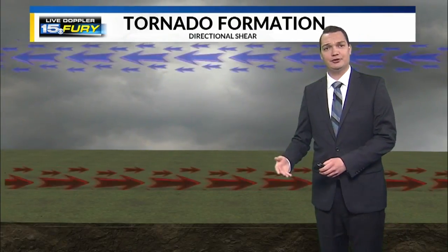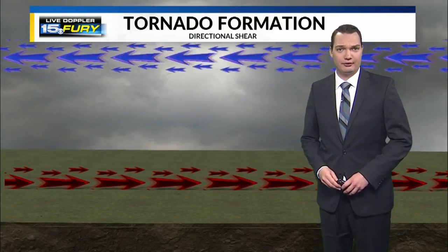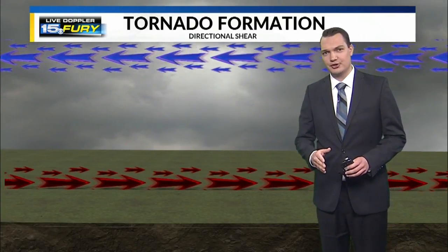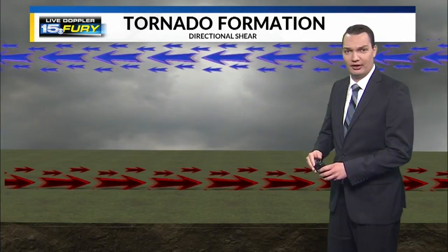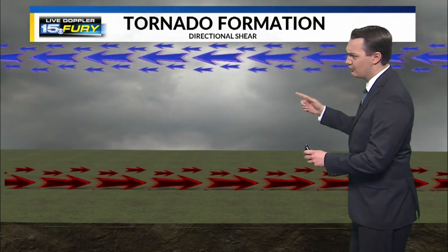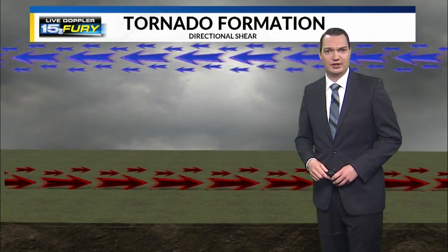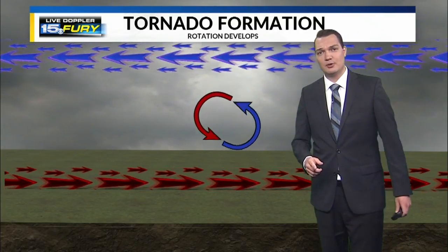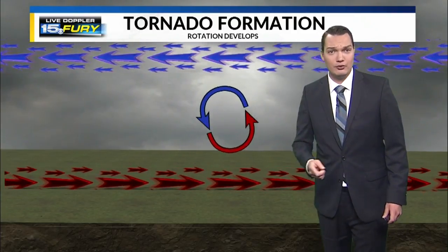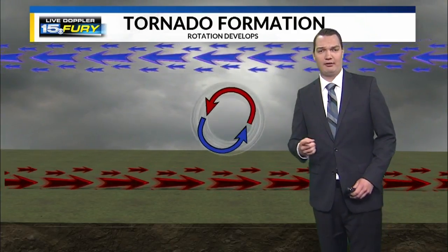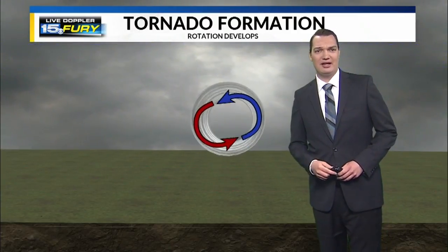The second type of shear is directional. Here it is illustrated by the upper level and near surface winds going in two different directions. Both of these could lead to an area of rotating air parallel to the ground.